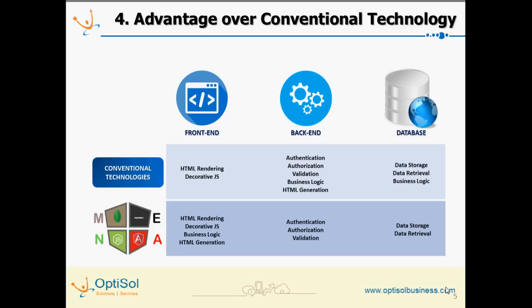The key difference with MEAN stack is the handling of business logic and HTML rendering in the client layer, using the server layer only for authentication and validation. Another major advantage is the NoSQL-based MongoDB, which facilitates simple storage in flat file format. As you know, this helps in big data and analytics-related initiatives.